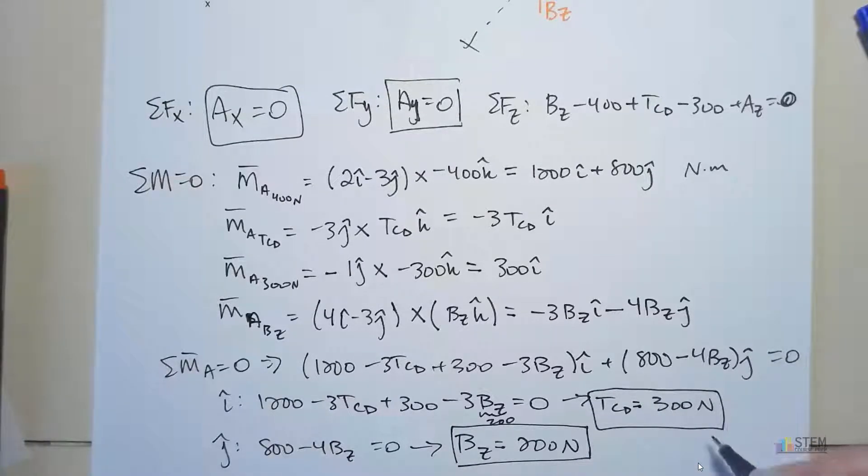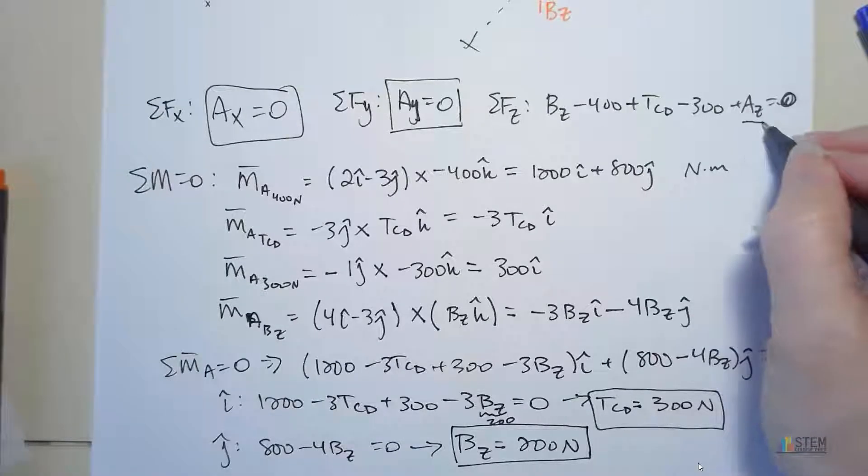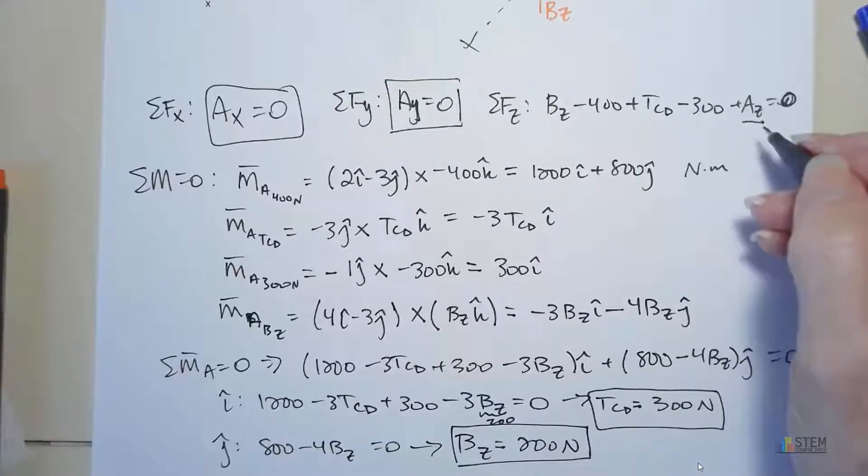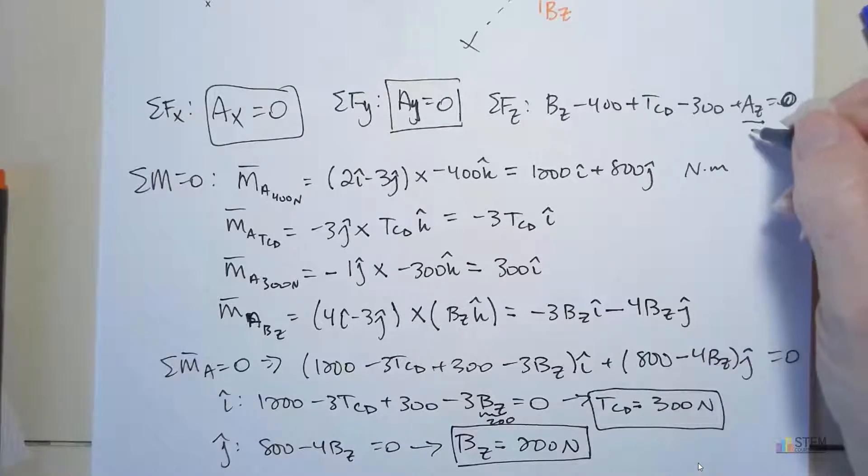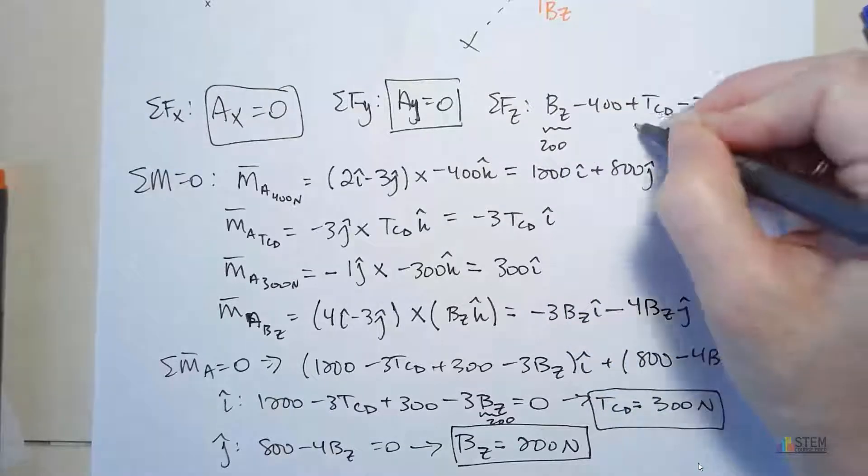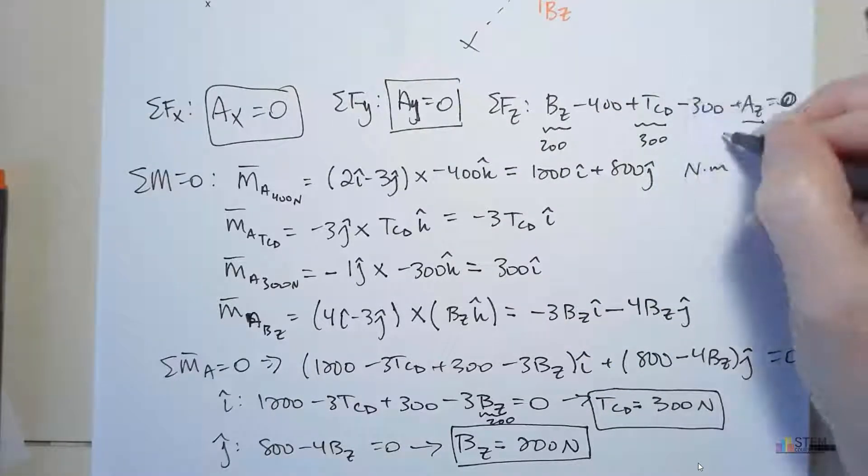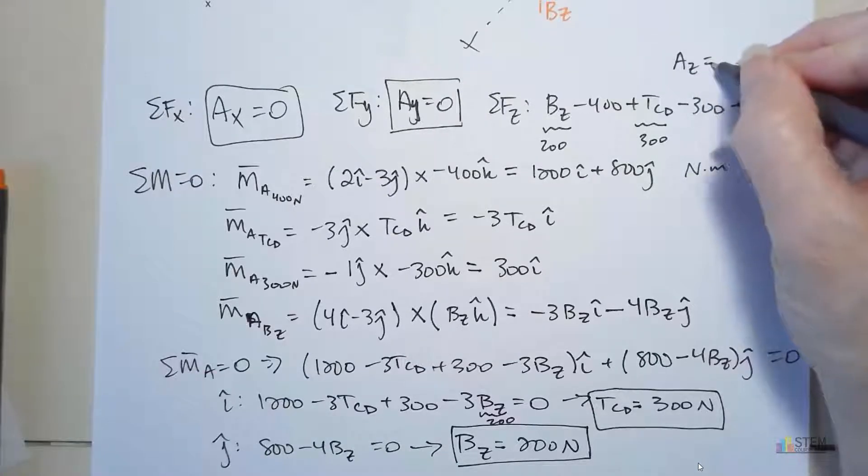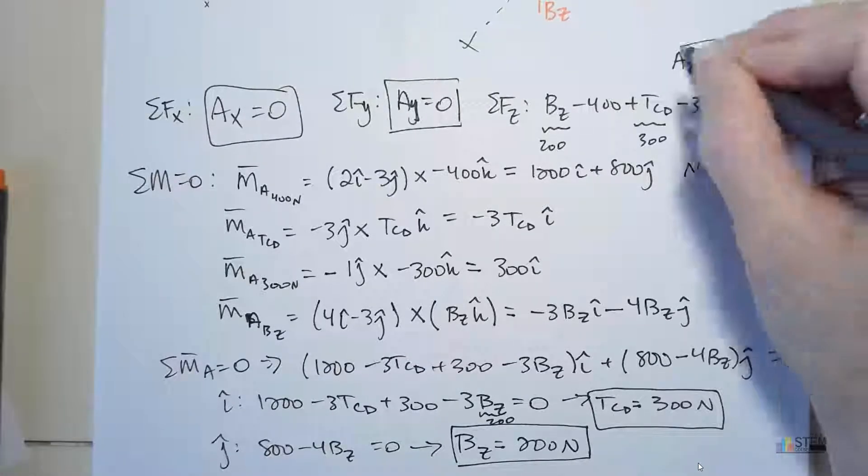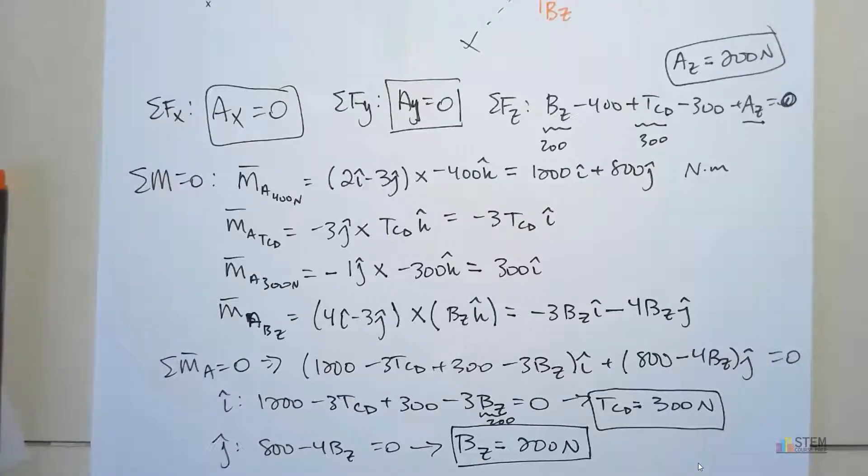And lastly, we're still missing one unknown. We need AZ. So you're going to come way back up here. You'll plug in the 200, the 300, and then you can solve for AZ. AZ will be 200 newtons. That gives you your five unknowns. Notice these are all positive, so we assumed the correct direction when we drew our diagram.